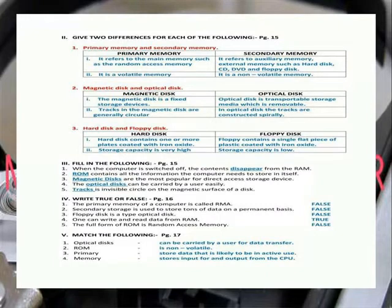True or false. The primary memory of your computer is called ROM - False. Secondary storage is used to store tons of data on a permanent basis - False. Floppy disk is a type of optical disk - False. One can read and write data from RAM - True. The full form of RAM is random access memory - False, it should be random access memory.